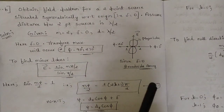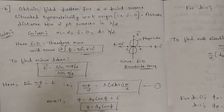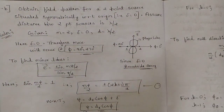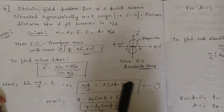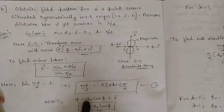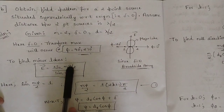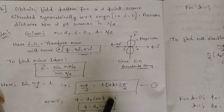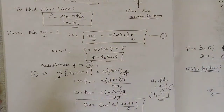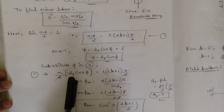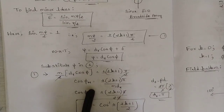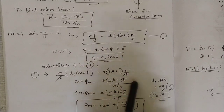This condition comes from the array of two isotropic point sources with equal amplitude and phase — which is also the case in this question. So applying the condition: nψ/2 = ±(2k+1)π/2, call this equation 1. Now, ψ = d_r·cos(φ) + δ, and since δ = 0, ψ = d_r·cos(φ). Substituting into equation 1: (n/2)·d_r·cos(φ) = ±(2k+1)π/2. Cancelling factors, cos(φ_m) = ±(2k+1)π / (n·d_r).